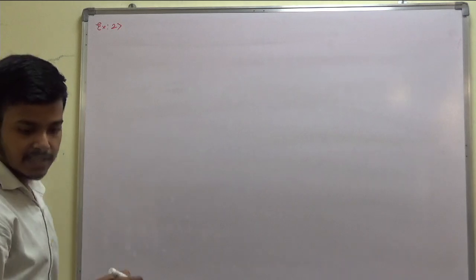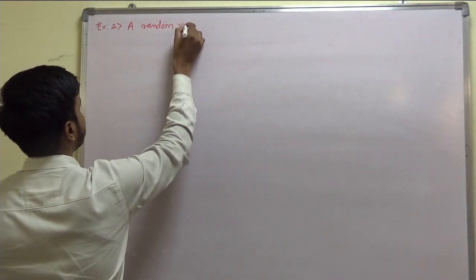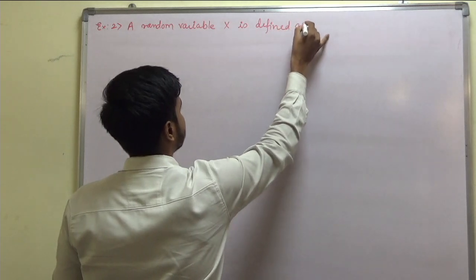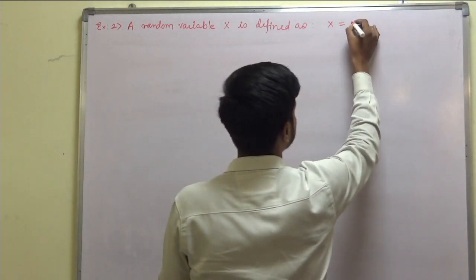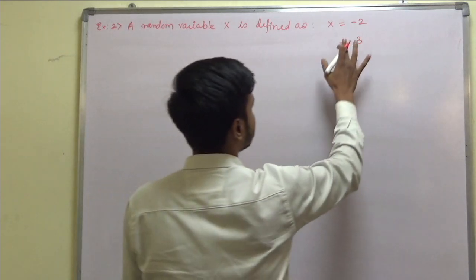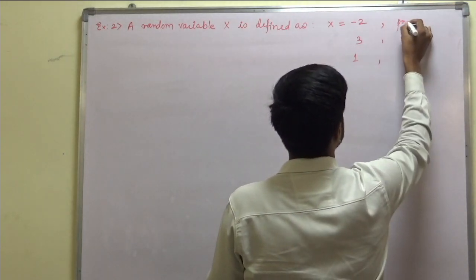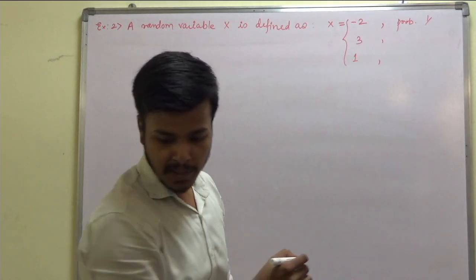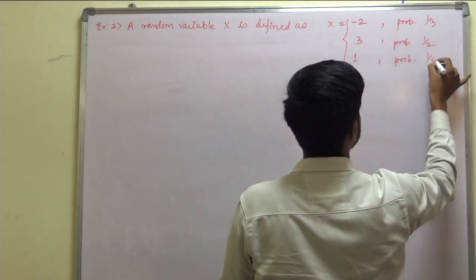Example number 2: a random variable x is defined as f of x, where x takes values minus 2, 3, and 1, with corresponding probabilities 1 by 3, 1 by 2, and 1 by 6.